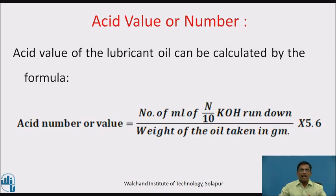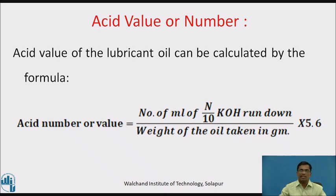Formula: the acid value of a lubricant can be calculated by the formula — Acid Value (or Acid Number) = (number of mL of N/10 KOH run down) ÷ (weight of the oil taken in grams) × 5.6.